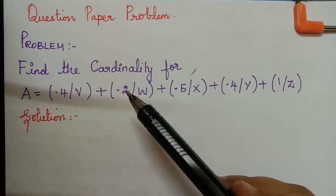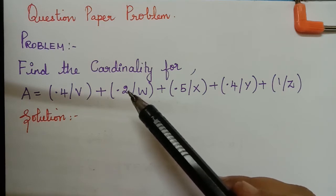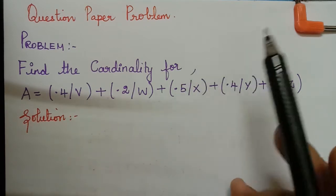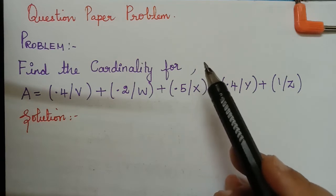Now in this video for this problem we are going to find the scalar cardinality and the fuzzy cardinality because the universal set X is not given in this question.